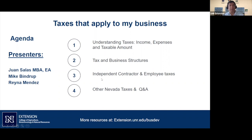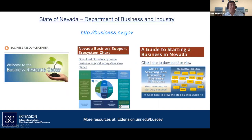First, let me point you to the Department of Business and Industry website — business.nv.gov. Go to the Business Resource Center and you'll find the Nevada Ecosystem Chart and the Guide to Starting a Business in Nevada. These are PDF files that serve as a guide and source of information for all business-related subjects.